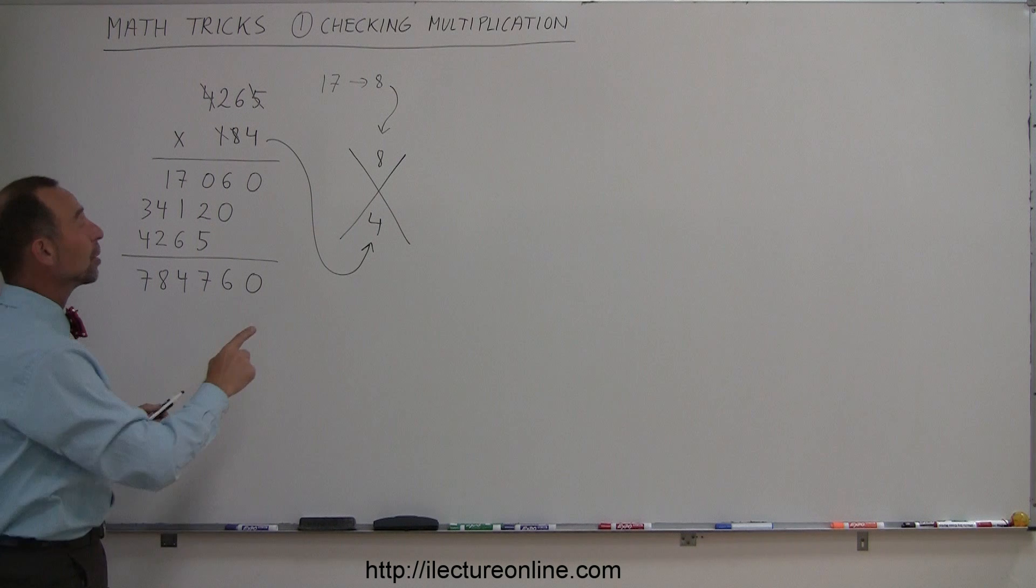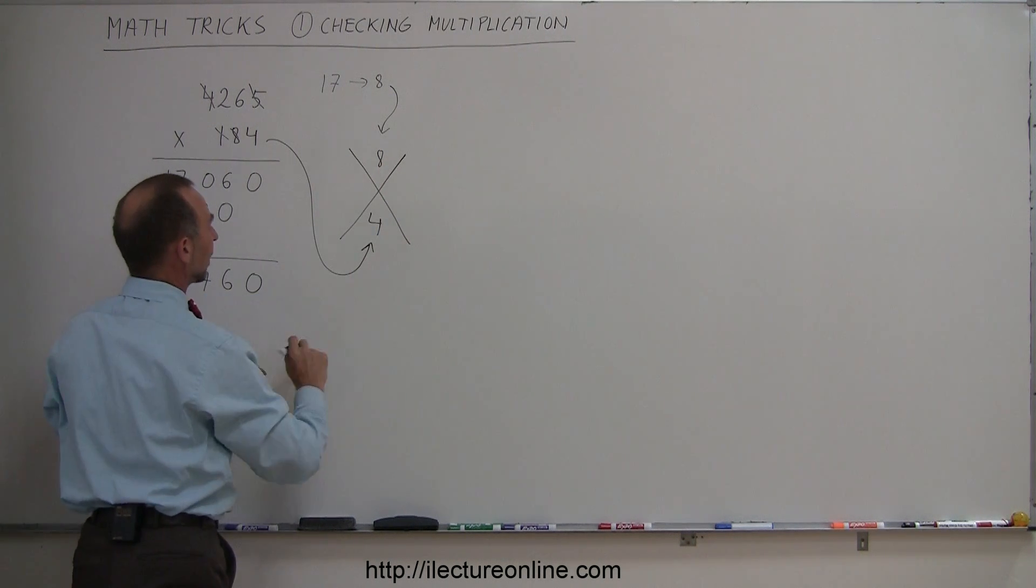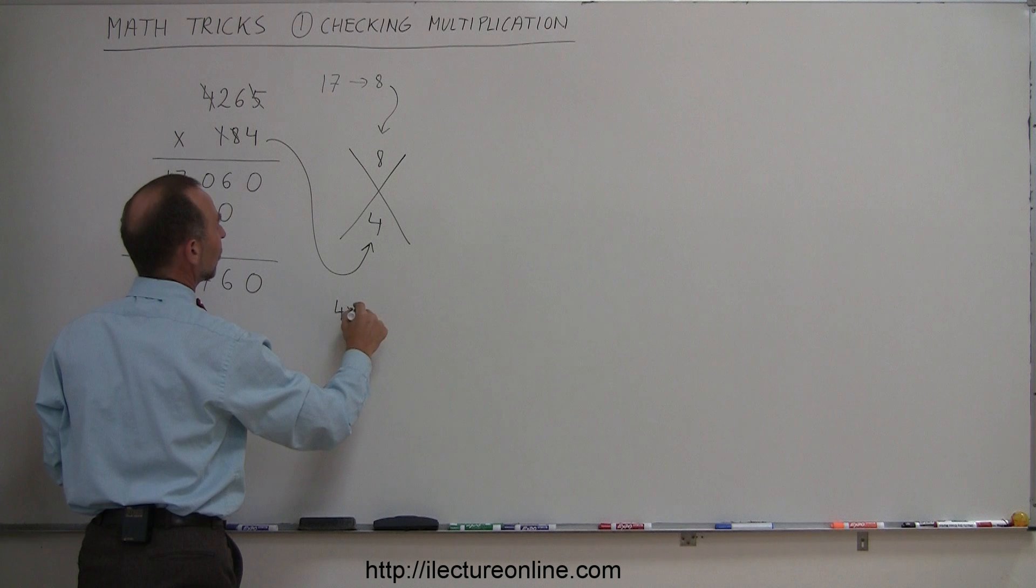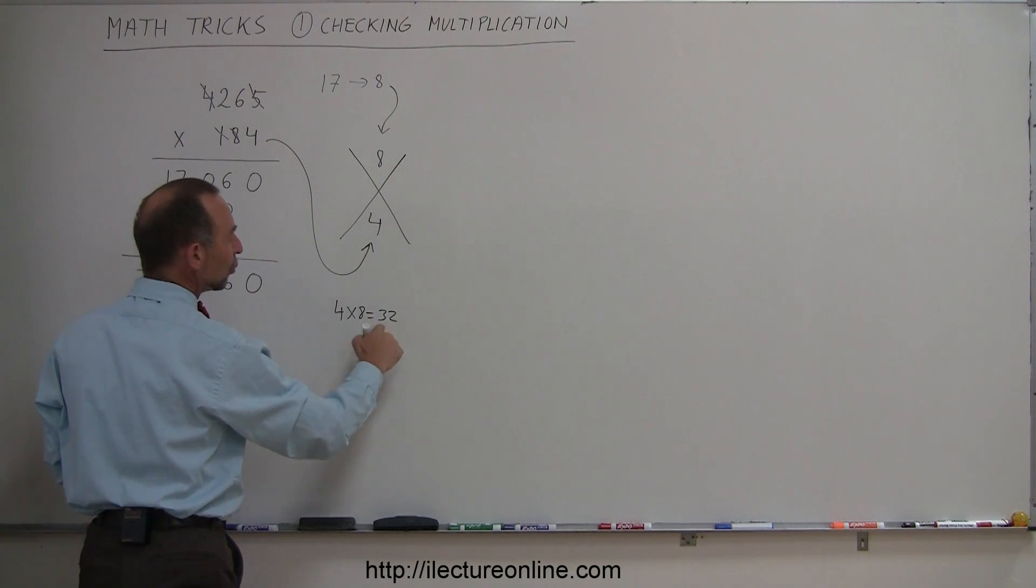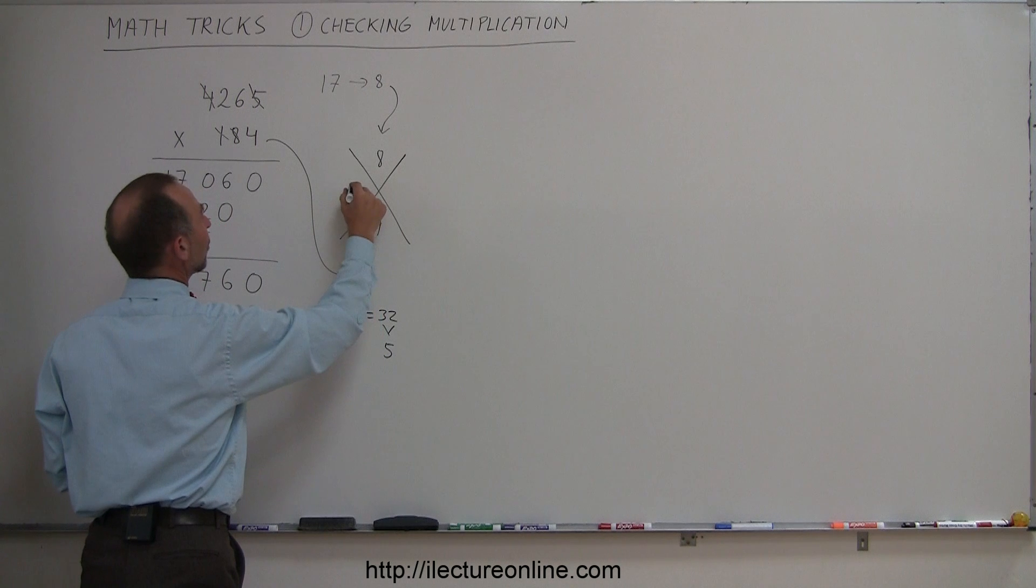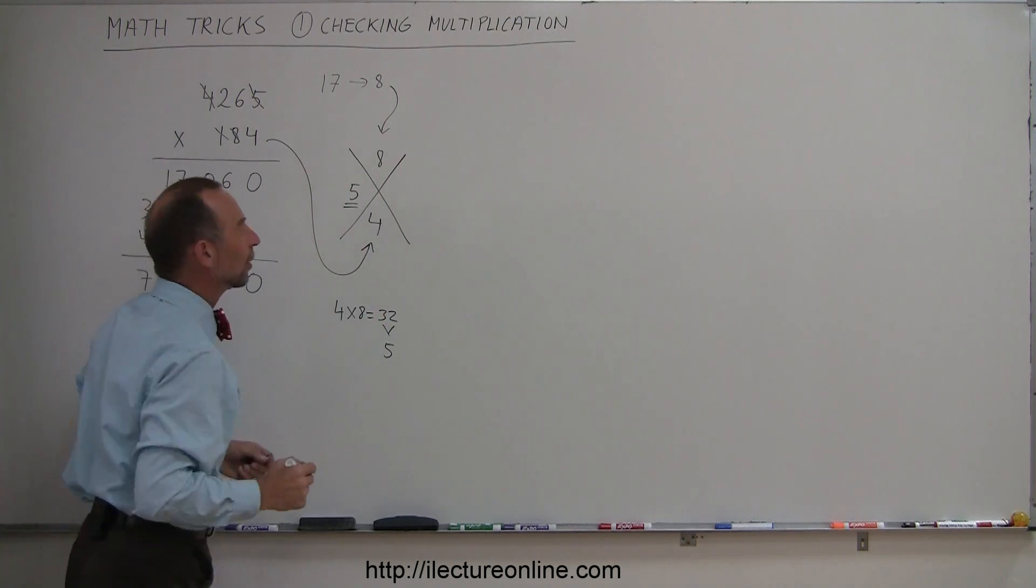The next thing you do is multiply these two together: 4 times 8 gives you 32. Then you add those two numbers together, 3 plus 2 gives you 5, and you plug that right in there on the left side.